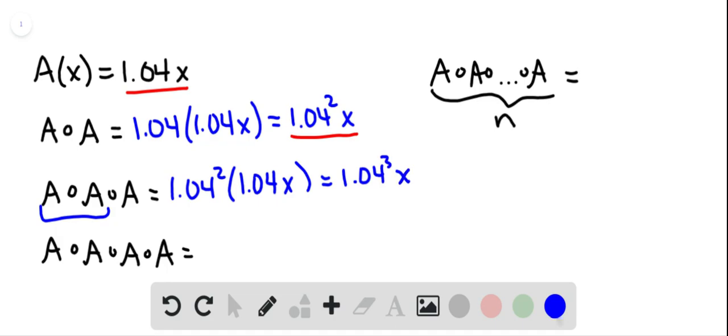And then for A of A of A of A, we're going to take what we just got and put one more A inside it and that will be 1.04 cubed times 1.04x. And that's going to be 1.04 to the 4th times x.